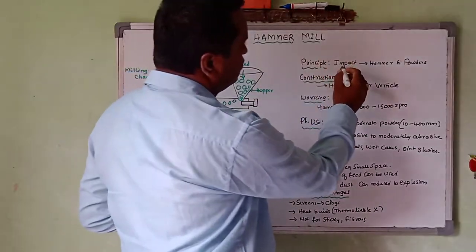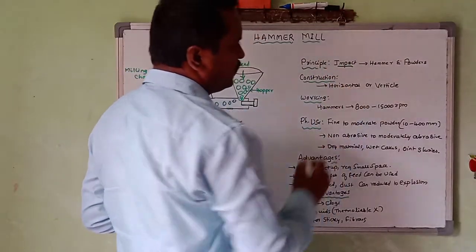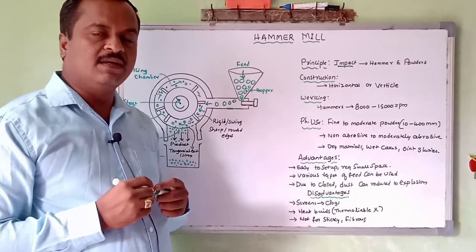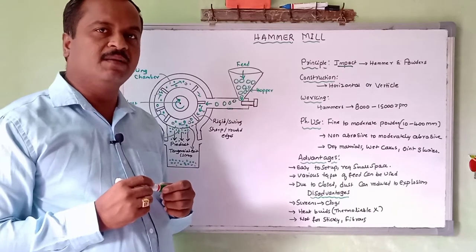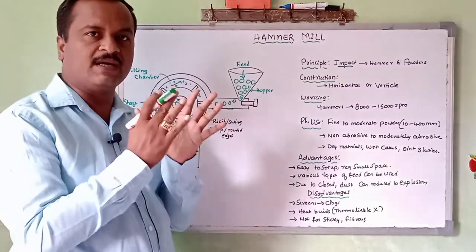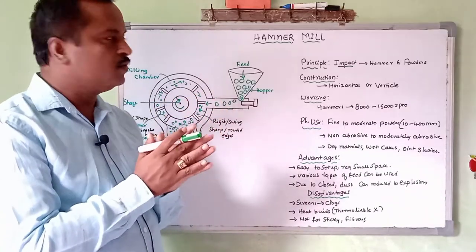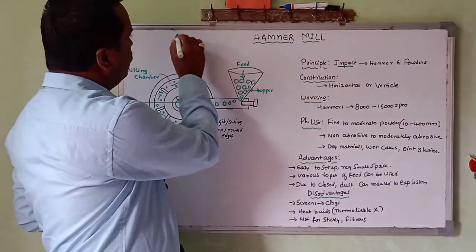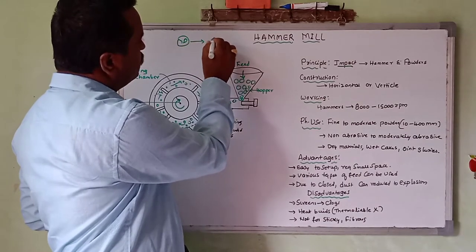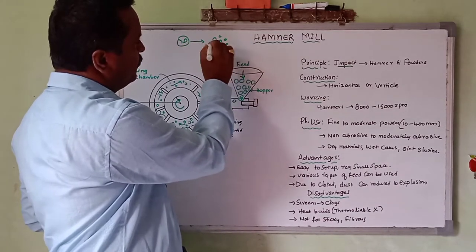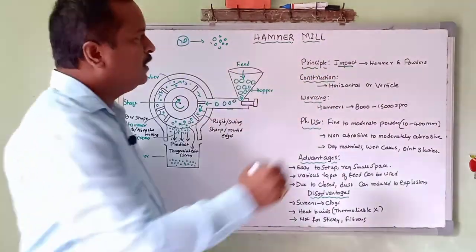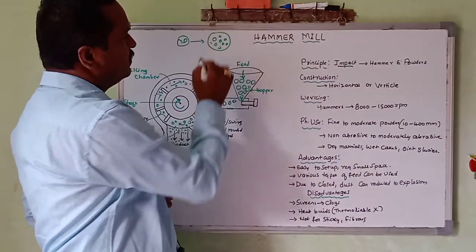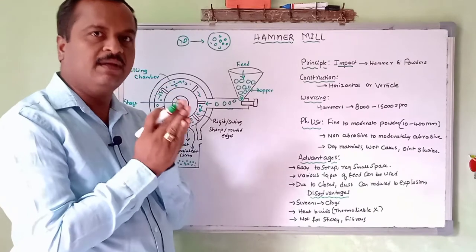The principle behind the hammer mill is mainly impact. What is impact? It is one principle in size reduction based on the reduction of the particle size by hitting the particle — breakdown of the particle from large to smaller. By using a hammer, these particles are hit and broke down into small particles. Hammer and powder when hit together will form a smaller particle. That is called impact.